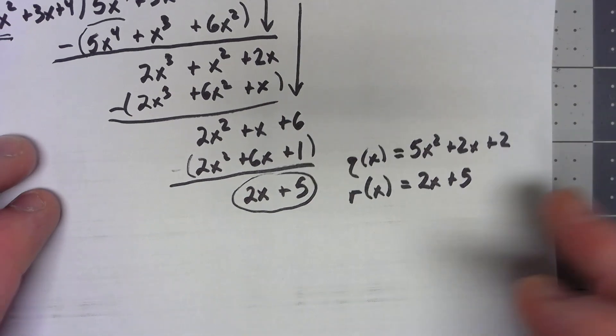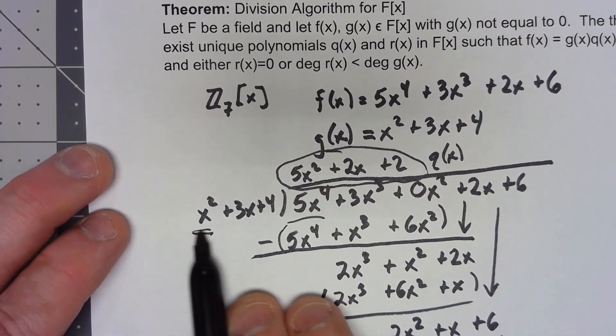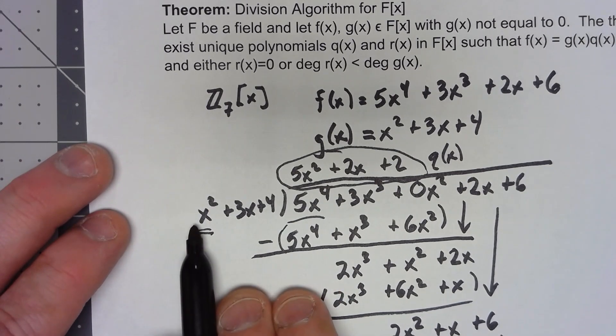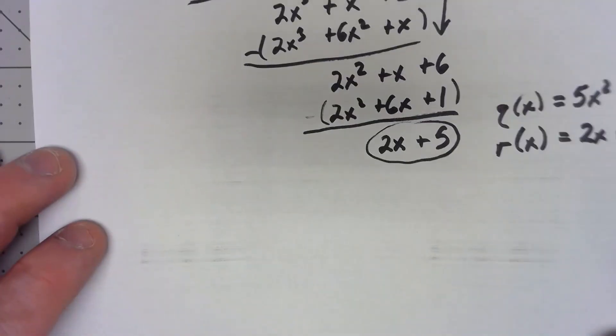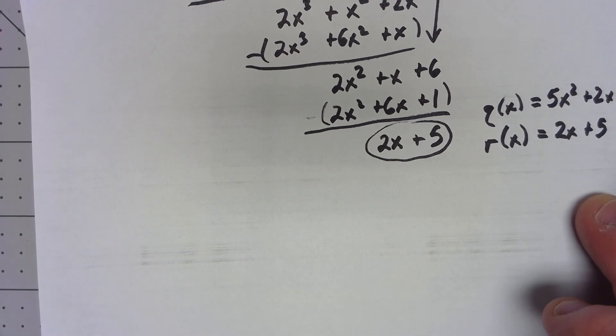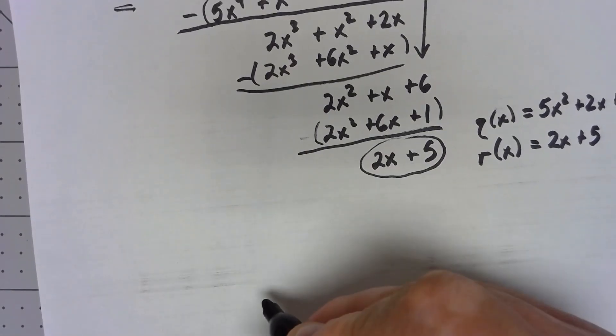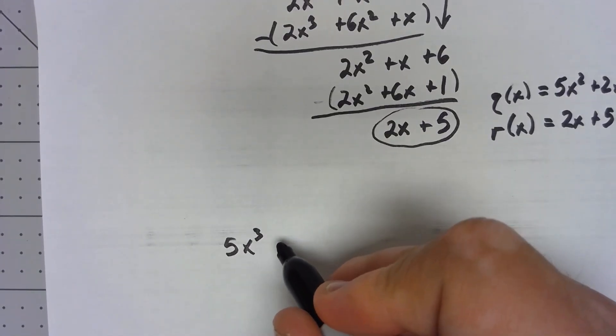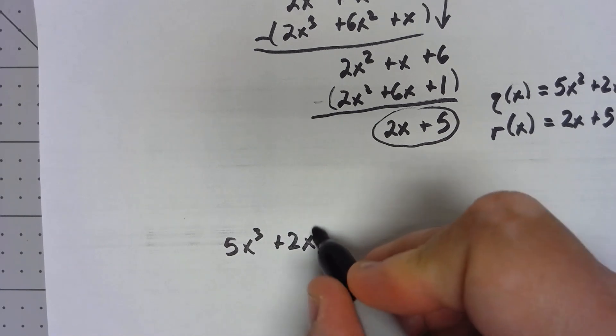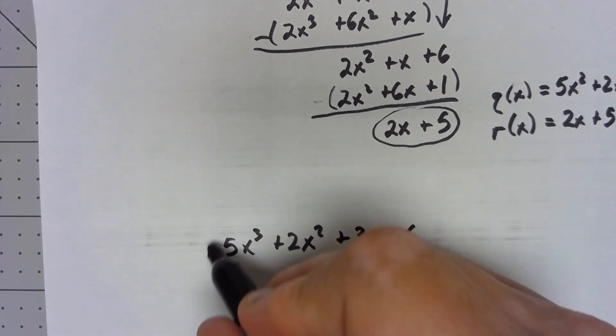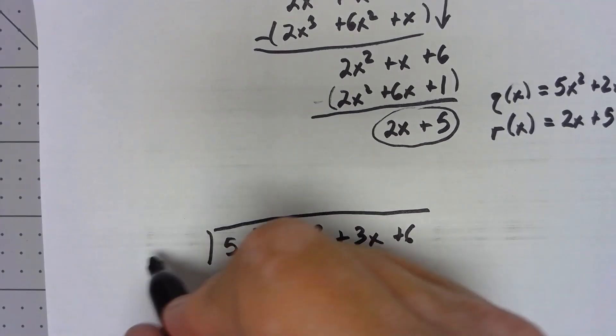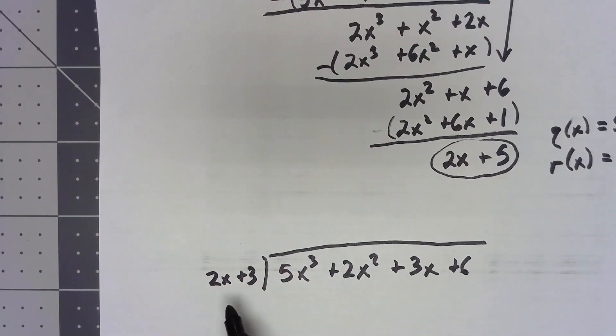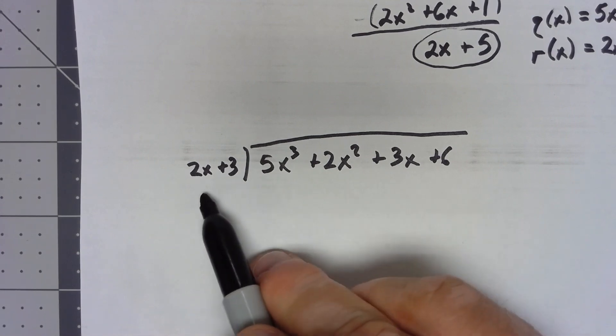Now, one of the things that made that a little bit straightforward is that I was just dividing by, my leading coefficient was just a 1. That made it really easy. Let's do one that's just a little bit harder. So here, let's say I had 5x cubed plus 2x squared plus 3x plus 6, and I'm going to divide by 2x plus 3. When I put stuff up top, I need to figure out what do I multiply 2x by to get this.